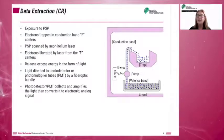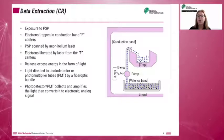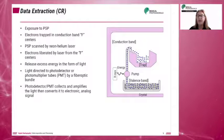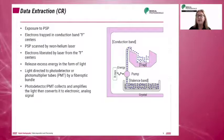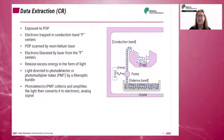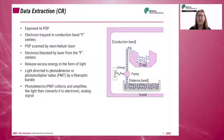All digital imaging employs a computer system to produce the visible image. With computed radiography, the imaging plate — or PSP — is exposed, causing ionization. The ionization then frees some of the phosphor atoms' electrons. These freed electrons become trapped in the conduction band of the imaging plate, creating electron holes, or F-centers.